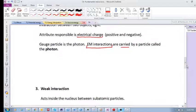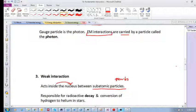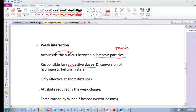Weak interaction. These are interactions that act inside the nucleus between subatomic particles, like quarks. It is responsible for decay, for radioactive decay, and the conversion of hydrogen to helium in stars, only effective at short distances. The attribute required is the weak charge